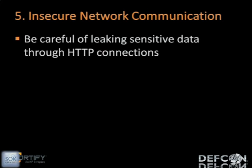Security vulnerability number five is insecure network communication. Just like in the case of insecure storage, what we're worried about is leaking sensitive data. In the case of insecure network communication, we're looking at data sent over HTTP. This vulnerability is not specific to the mobile world or Android — it existed in regular web applications. You'd think we learned from our mistakes and know that sensitive data needs to be sent over HTTPS. But turns out that's not the case, and here are some examples.